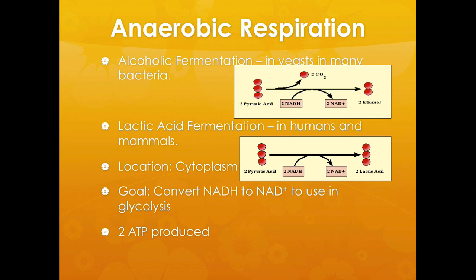Now we're going to move on to anaerobic respiration. Anaerobic means without oxygen. There are two main types: alcoholic fermentation and lactic acid fermentation. Alcoholic fermentation happens in yeast and many bacteria. Lactic acid fermentation is what happens in humans and mammals. For alcoholic fermentation, you get two ethanol as a product. For lactic acid fermentation, you get two lactic acids as the product.